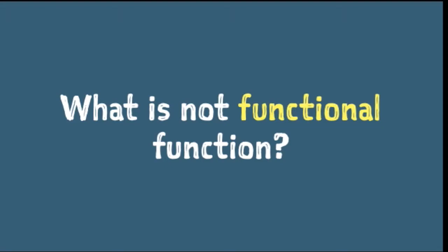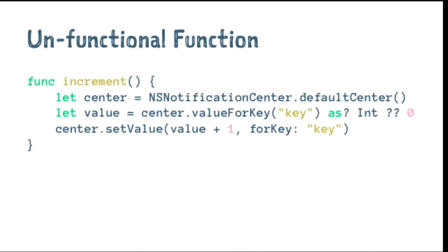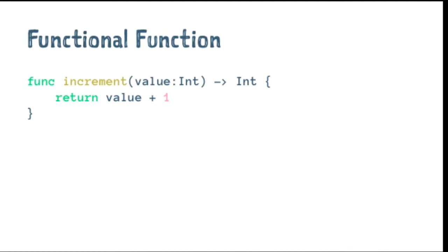So what is a non-functional function? Here we have a function called increment which increments a global variable by one. This is mutating global state, therefore it has a side effect — when this function is called, it alters state elsewhere in the application. Another example uses a singleton like a default center to increment some value, which is also changing global state. This makes it really hard to test. In contrast, a functional function takes a value, performs the increment operation, and returns that result — no side effects, no mutability, and no reliance on global state.